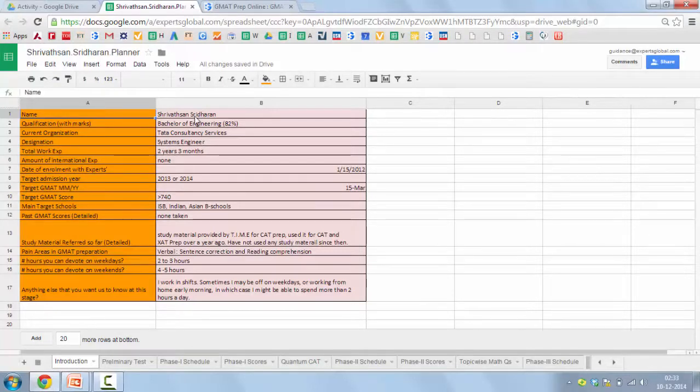And to begin with, the student has to give us the basic details: the name, the qualification, current organization, designation, amount of work experience, amount of international experience, enrollment with us, date of enrollment with us, target admission year, target GMAT date, target GMAT score, main target schools, past GMAT scores, study material referred to before enrolling with us, pain areas on the GMAT, and very importantly, how many hours can a student devote on weekdays and weekends? Anything else that a student may want us to know.